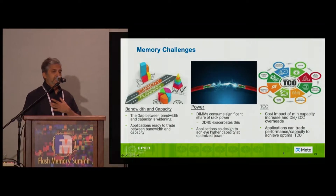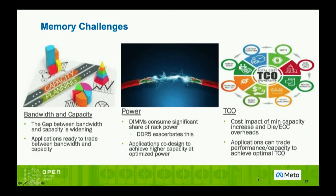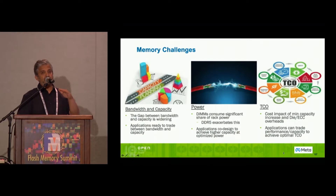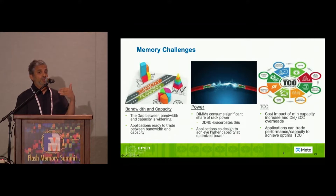From a memory perspective, there are three aspects you can look at: how much capacity we put, what kind of performance we expect, what tradeoff applications are ready to make, and what options we have — and eventually how that translates to TCO. There is a significant gap growing between the capacity that we land and the bandwidth need. Applications that need performance need to continue to land more and more memory to achieve higher performance. Applications that need more capacity also land more memory but get a lot of bandwidth they may or may not be able to use. So there is a discrepancy in the way capacity and performance keeps growing.